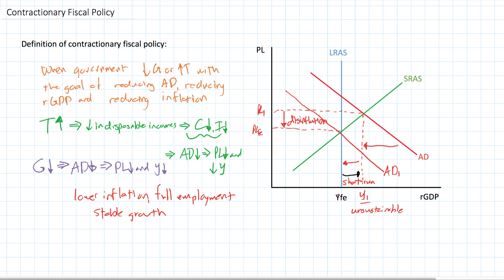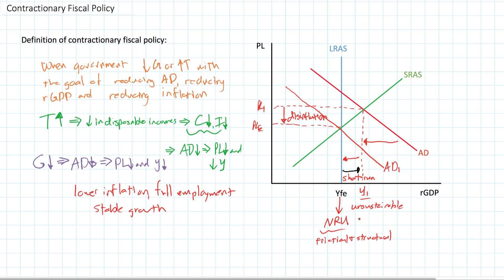And output has returned to full employment as well. We are now back to YFE, where the country has its natural rate of unemployment. Only frictional and structural. These are the quote-unquote healthy types of unemployment that a country producing at full employment will have.